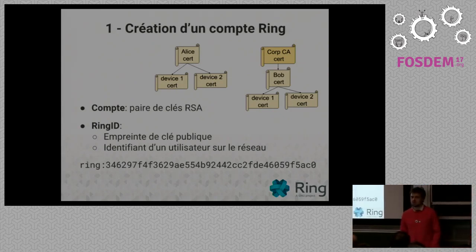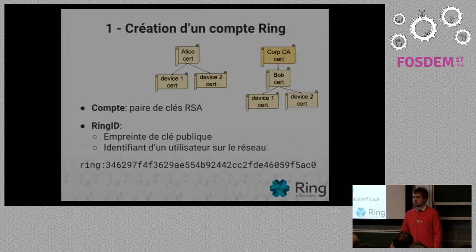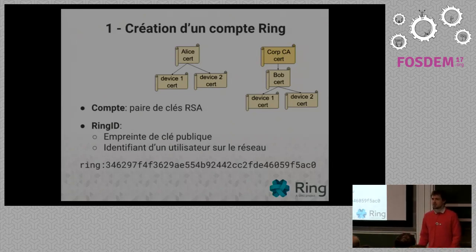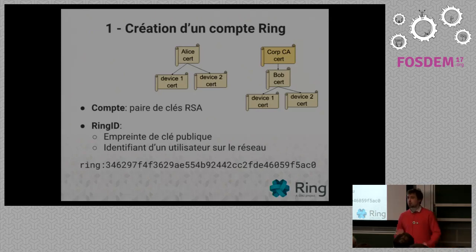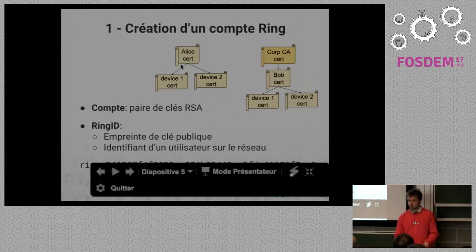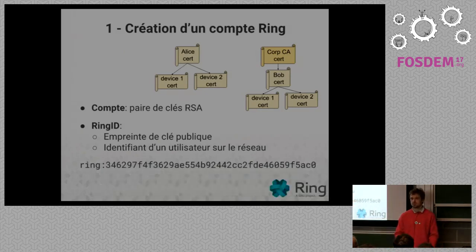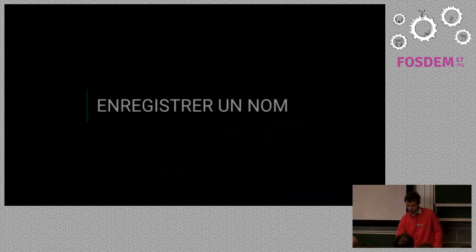We try to make Ring as easy as possible to use for end users. Our goal is to make Ring just as easy to use as any other proprietary communication software. The absence of a central server should be as transparent as possible for the user — they shouldn't have to care about the existence or non-existence of a central server, except of course for users who understand the implications.